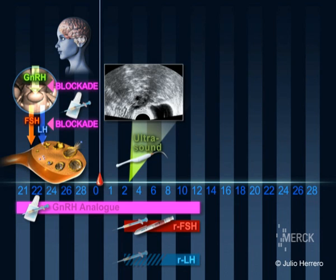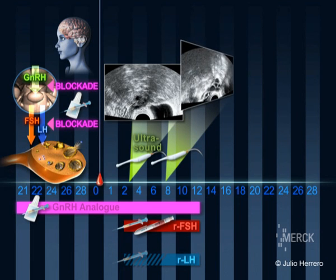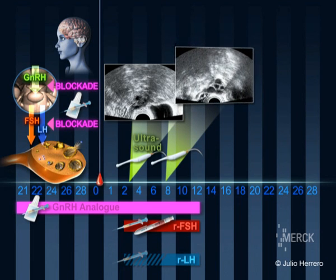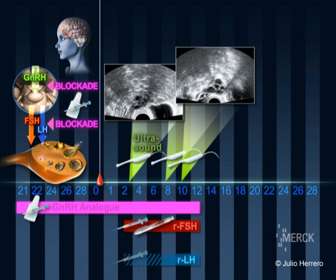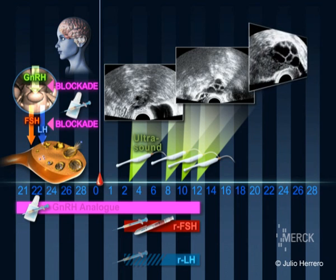At the end of approximately 4 to 6 days of stimulation, another scan is performed to check the number and size of the follicles as well as the quality of the endometrium. Every 2 or 3 days, a new scan is performed.